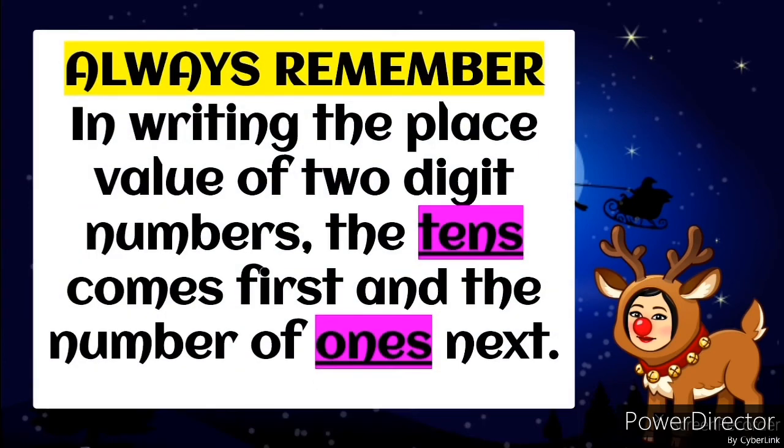Always remember: in writing the place value of two-digit numbers, the tens comes first, and then the number of ones.